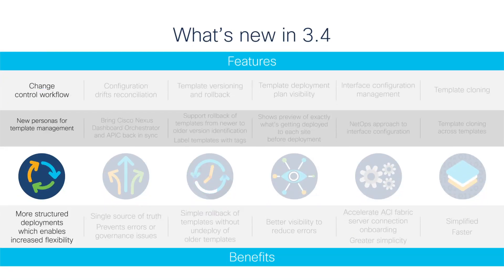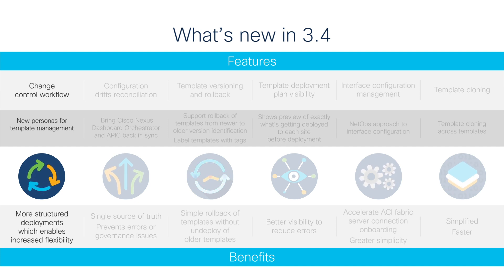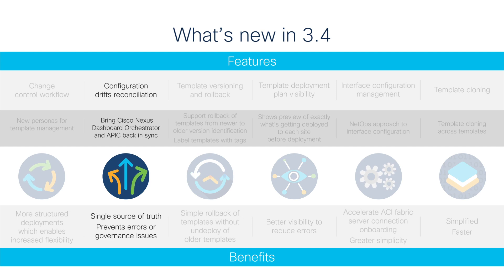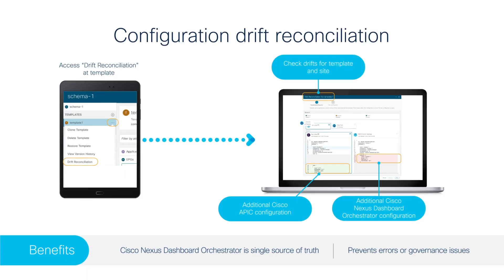Version 3.4 supports change control workflow with new personas for template management, enabling more structured deployments and improved flexibility. Configuration Drift Reconciliation helps you bring Cisco Nexus Dashboard Orchestrator and APIC back in sync, providing a single source of truth to minimize errors and governance issues.